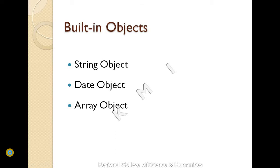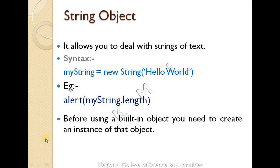The first one is the string object. It allows you to deal with strings of text. We use string objects daily in programming, and to use one, we have to create an instance of the object.